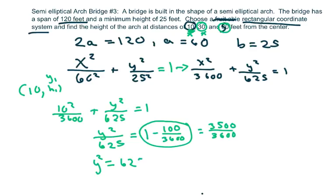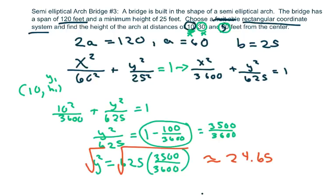So $y^2 = 625 \times \frac{3500}{3600}$. You square root both sides, just put this in the calculator if you want, and you will get $y \approx 24.65$ feet. So that's your first $y$, giving you the point $(10, 24.65)$.